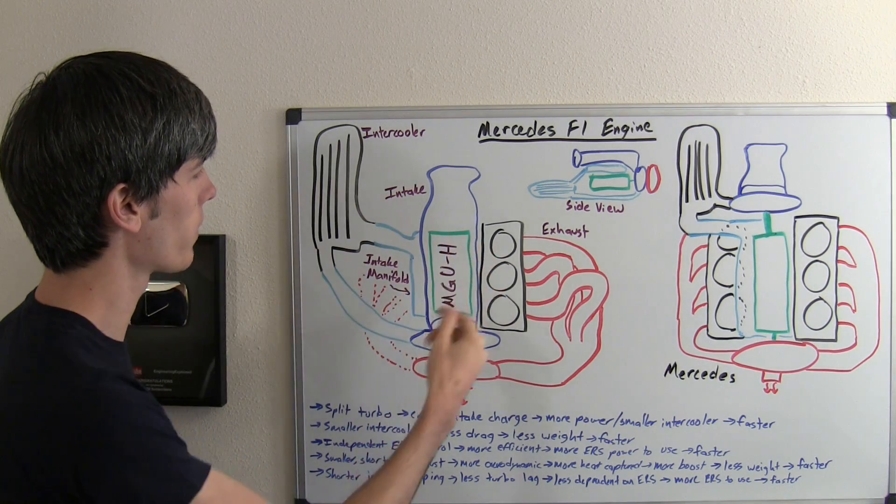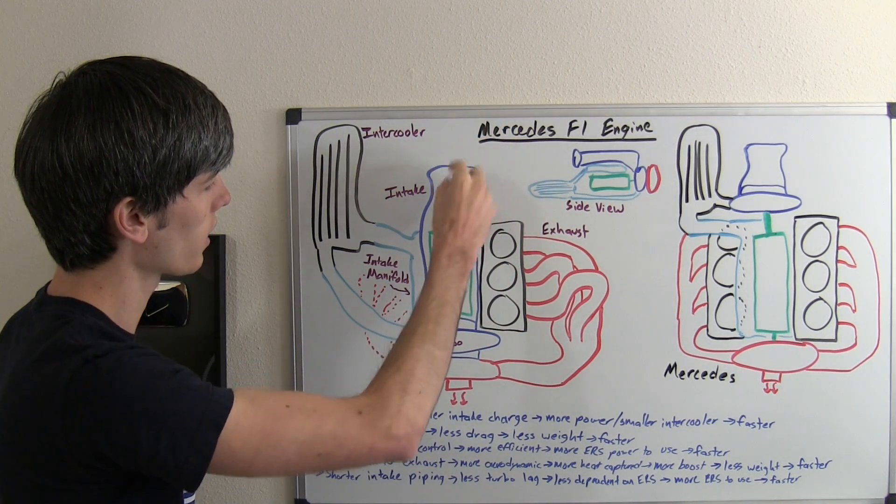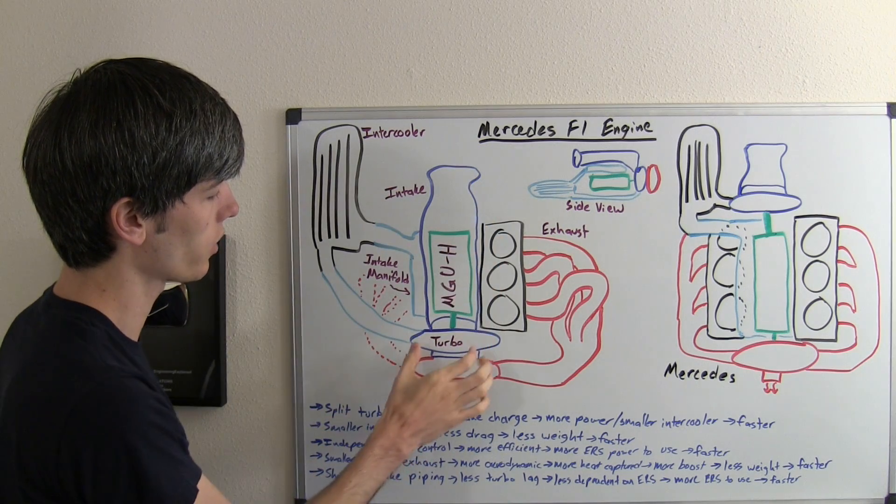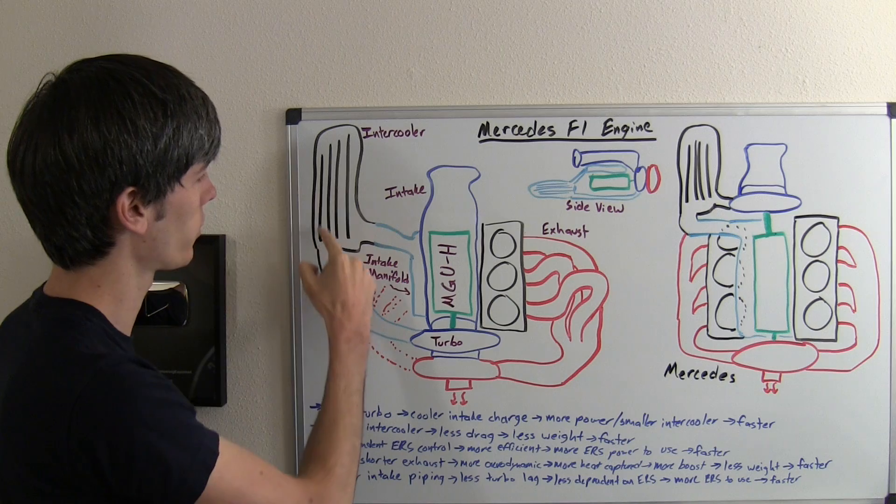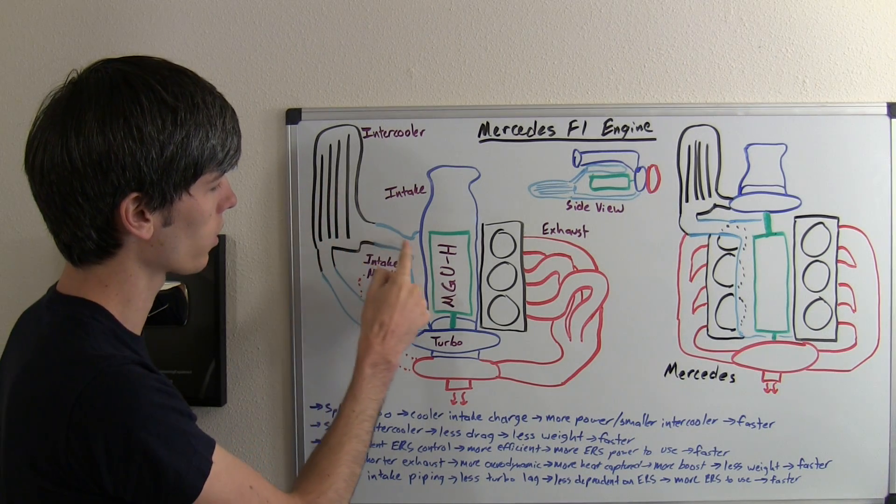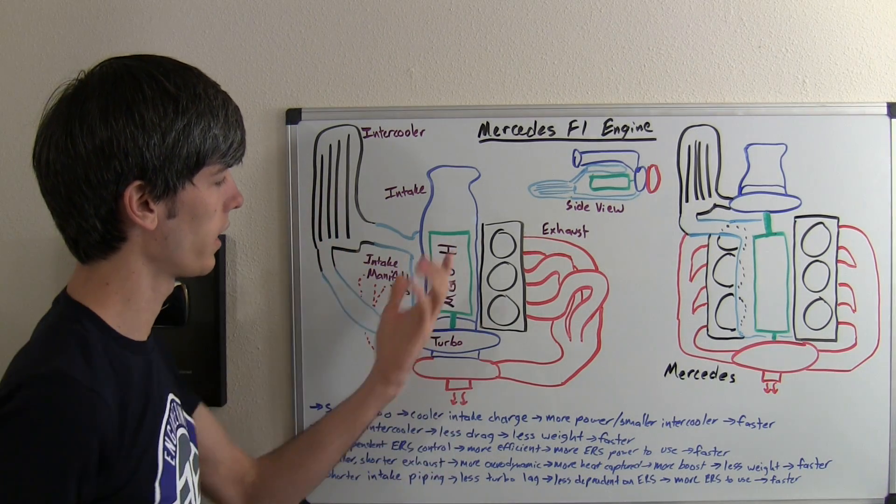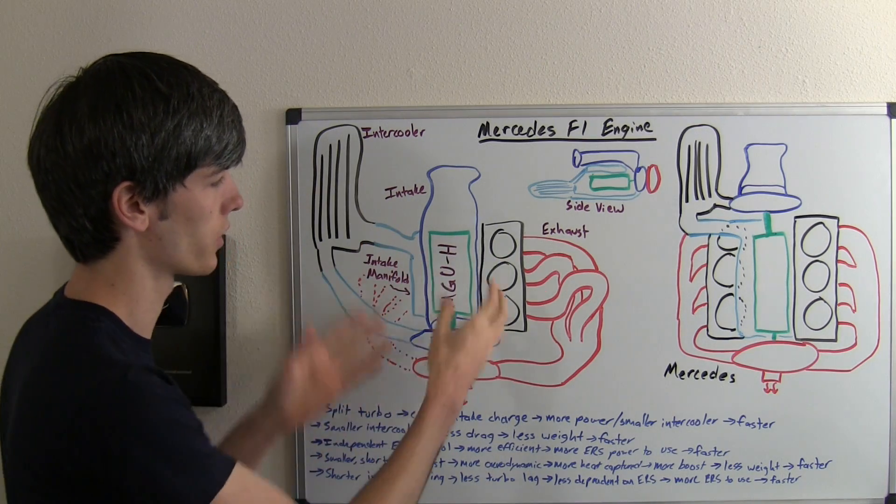Right here, we'll just follow the intake air. We've got this intake coming in, your air is going to pass down to the turbocharger at the rear. That intake air then passes through the intercooler, goes from the intercooler into an intake manifold where it then passes into the six cylinders.